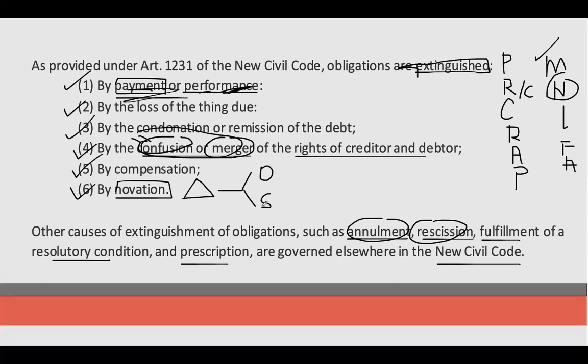To give you an overview: pag sinabing Subjective Novation, ang binabago sa kontrata or sa agreement is either yung debtor — iba na ang magbabayad. So si Juan de la Cruz example at saka si Pedro — Juan de la Cruz pinautang niya si Pedro, so creditor si Juan de la Cruz, debtor si Pedro. Tapos nandyan si Carlo, sabi ni Pedro kay Juan de la Cruz, 'Ay Juan de la Cruz, wag mo na akong singilin ha, ito si Carlo, siya na ang magbabayad sa'yo.' So nagbago ang debtor — ang tawag natin dyan is Substitution.